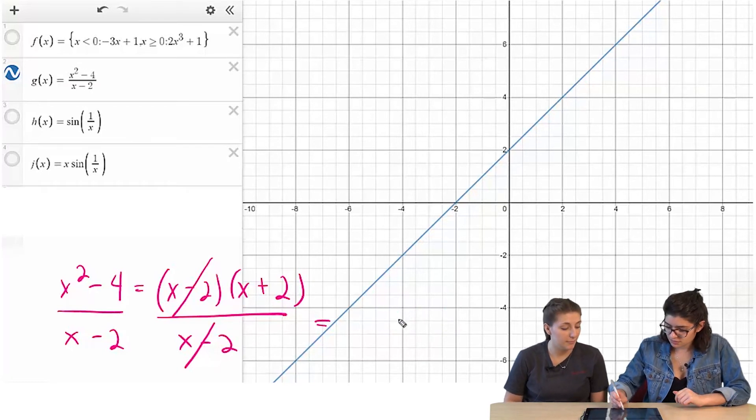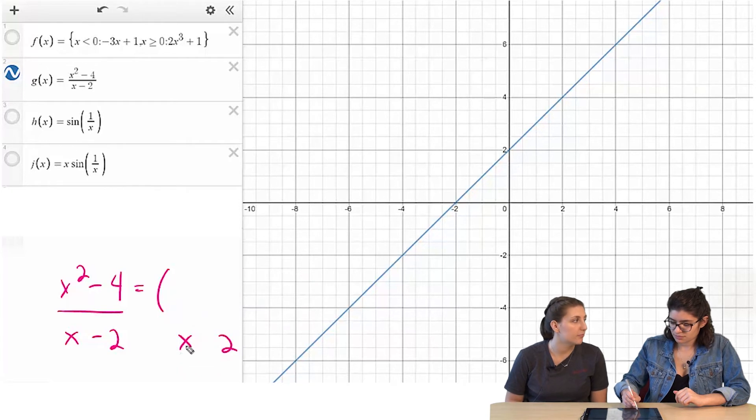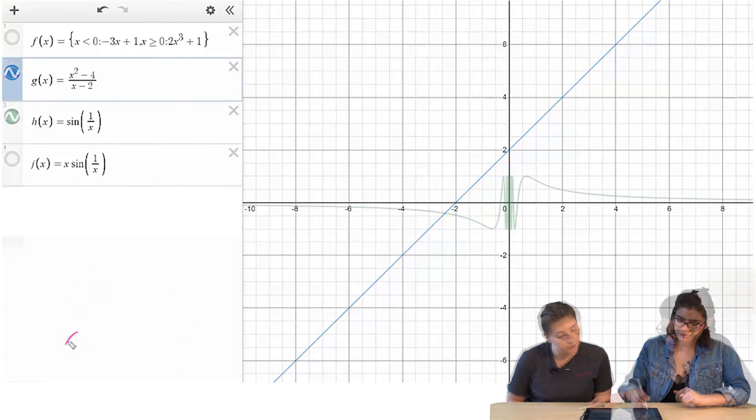Yeah. So maybe the denominator is just irrelevant because it's canceled out. Could be. I mean, the line looks like the line x plus 2. Yeah. I think it's continuous. All right.